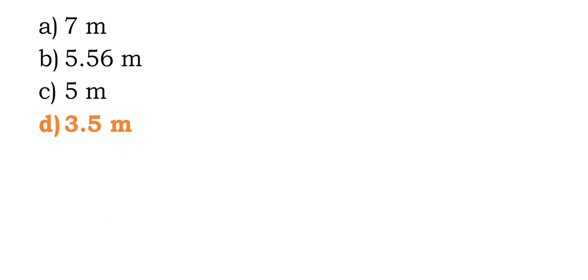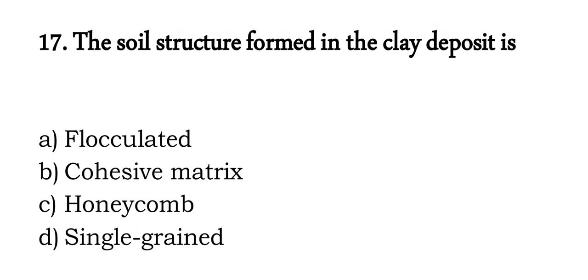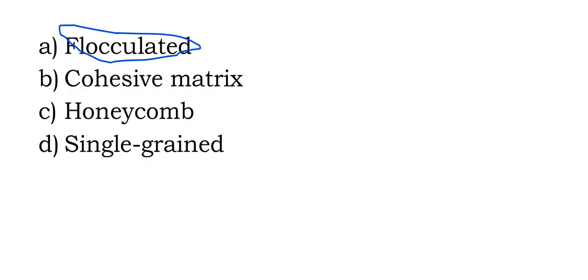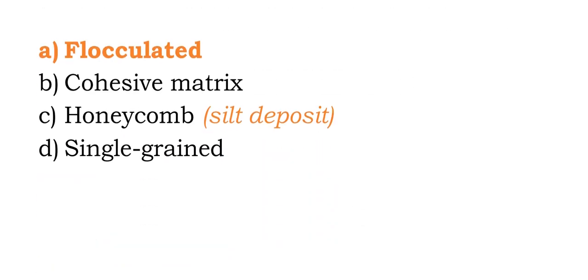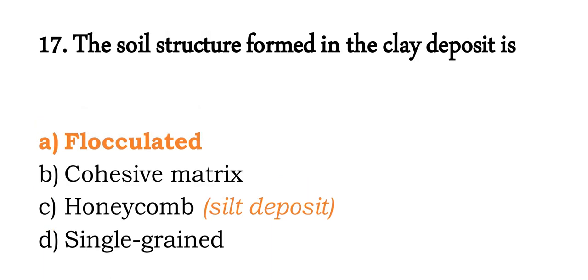Question 17: soil structure formed in clay deposits is called flocculated structure. There are two types: face-to-face (dispersed) and face-to-end (flocculated). For silt deposits, a honeycomb structure is formed.